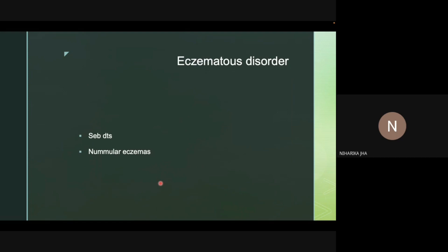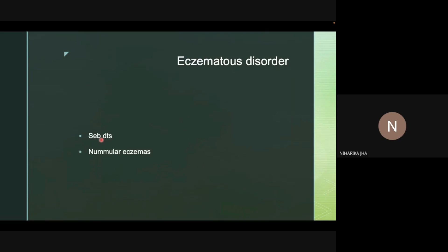Eczematous disorders with annular appearance include nummular dermatitis and seborrheic dermatitis. Not all seborrheic dermatitis will have annular appearance, but the petaloid type can. To confirm seborrheic dermatitis, look for greasy yellowish scales over seborrheic areas — eyebrows, nasolabial folds, retroauricular area, upper chest, upper back, and navel area in addition to the scalp.